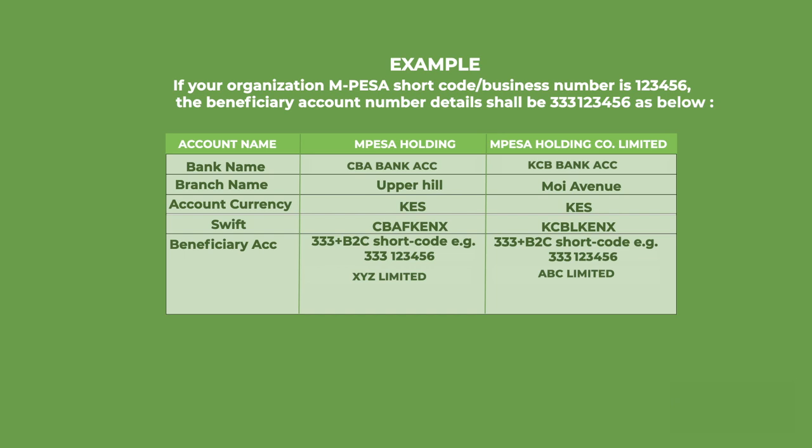For example, if your organization's M-Pesa Business number is 123456, the beneficiary account number details shall be 333-123456. The account details are shown below.